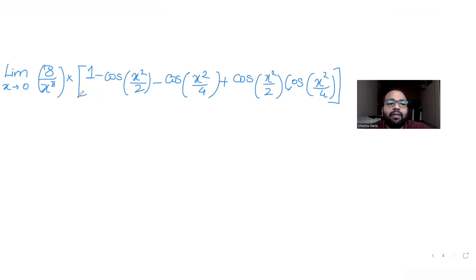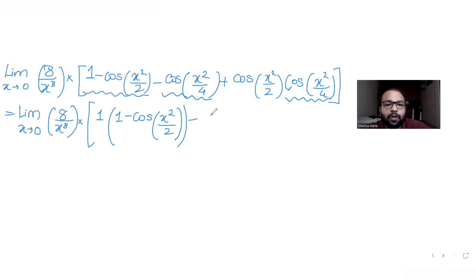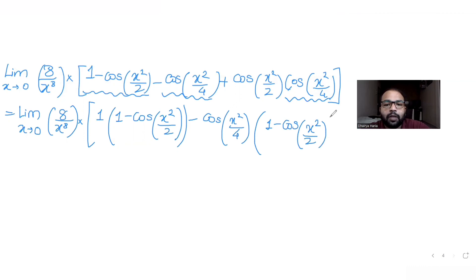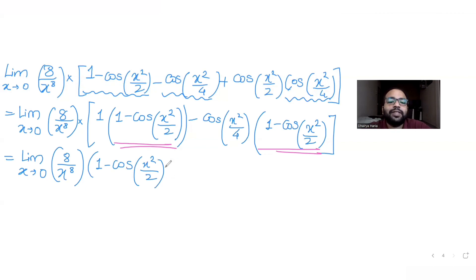Solving further: limit x tends to 0, 8 upon x raised to 8. Nothing is immediately common, so I take out 1 minus cos(x²/2) as a common factor. What remains in the bracket is: minus cos(x²/4), and then 1 minus cos(x²/2) is taken out, leaving 1 minus cos(x²/2) as a common factor from the two terms.